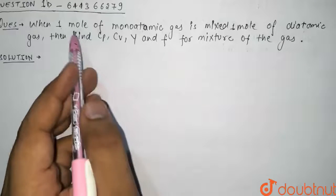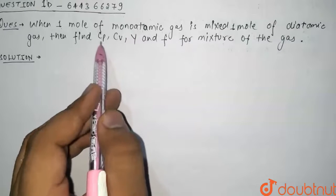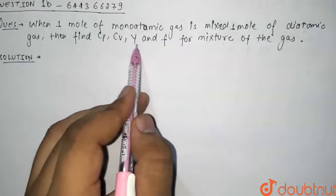In this question we have been given one mole of monatomic gas and one mole of diatomic gas, and they are mixed. Then we have to find Cp, Cv, gamma, and F.